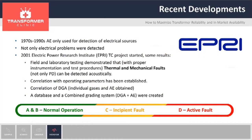In recent developments with this acoustic emission technique, we have a project since 2001 with EPRI. The reason for the project was the industry believed that only electrical faults could be detected with acoustic emission. However, we had a number of tests where non-electrical problems were also detected. After this program, we were able to prove that high-temperature faults and mechanical faults can also be detected with acoustic emission, and we also developed a grading system. A and B is normal operation out of the 1,500 tests we have done. C is an incipient fault, and D is an active fault. Out of 1,500 tests, only 60% have been A or B, 3% have been incipient faults, and only 10% have been active faults. Out of that 10%, we actually had two catastrophic failures a few months after the test was done.